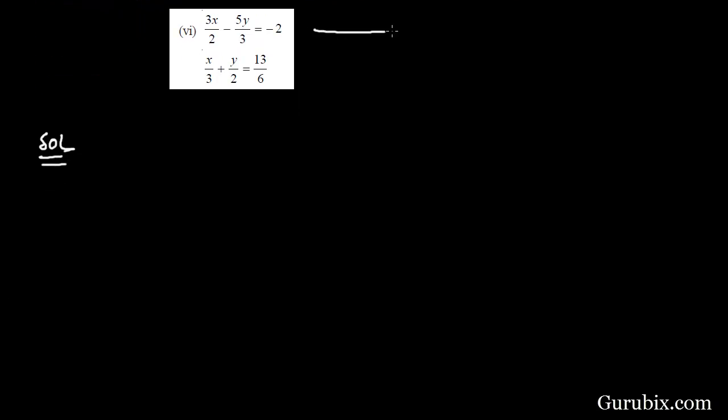First of all we shall add that this is our equation number 1 and this is our equation number 2, and we shall start with equation number 1. From equation number 1 we have 3x over 2 minus 5y over 3 equals minus 2.